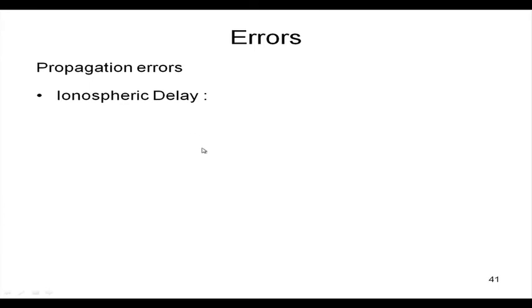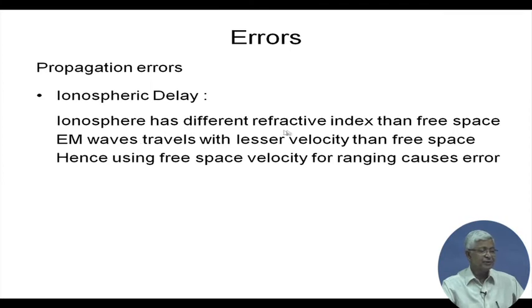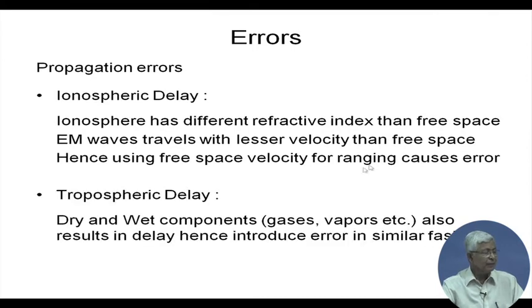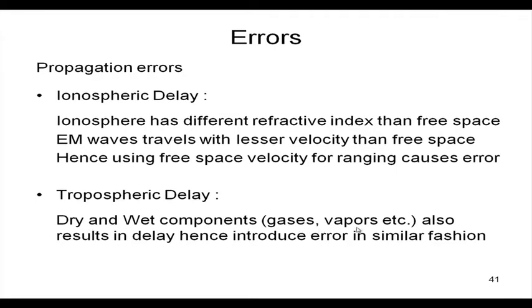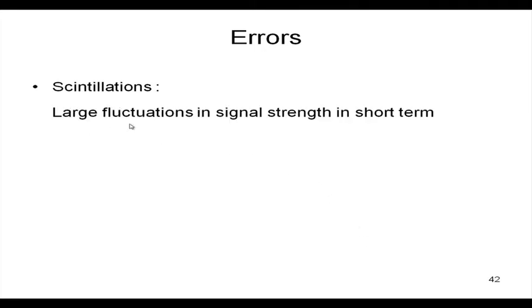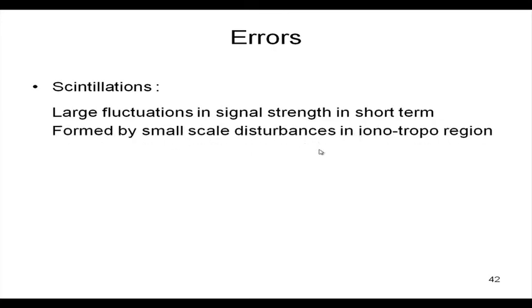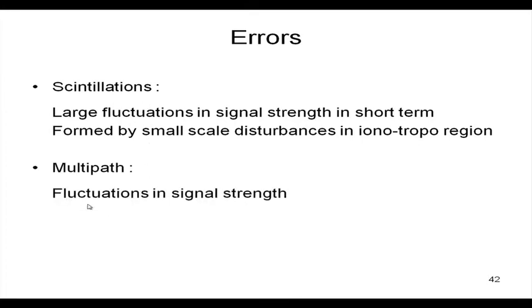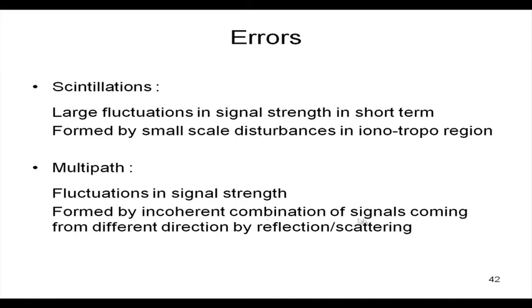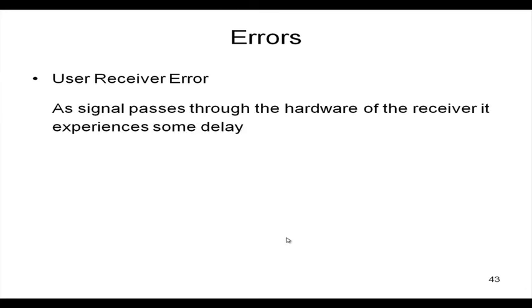In the propagation path, ionospheric delay is important: the ionosphere has a different refractive index than free space, so electromagnetic waves travel at a lesser velocity, causing ranging error. At L-band, allocated for satellite navigation, the ionospheric error is quite dominant. Tropospheric delay has dry and wet components from gases and vapors. Scintillation is large short-term fluctuation of signal strength caused by small-scale disturbances in the ionosphere or troposphere. Multipath is fluctuation of signal strength due to reflections and incoherent combination of signals from different directions.